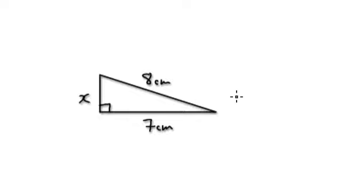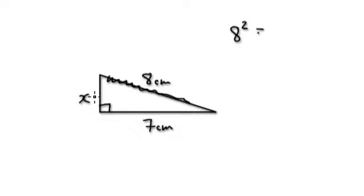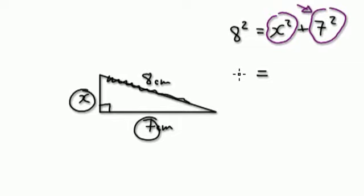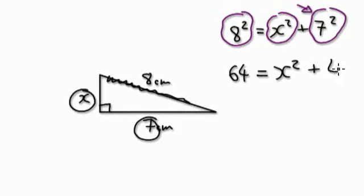Next example. Again, no angle involved, so we are not working with trigonometry — we need Pythagoras. With Pythagoras, the longest side is always on its own. The hypotenuse is always on its own. So it would be 8 squared equals x squared plus 7 squared. You're trying to work out x, trying to get x on its own. So 8 squared is 64, giving us 64 equals x squared plus 49.